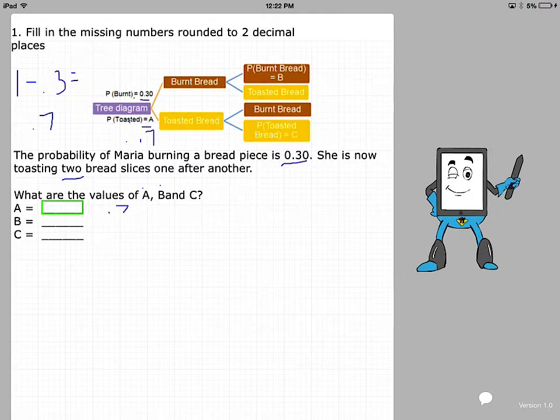Next, let's find what B equals. If we follow the tree diagram, the first piece of bread was burned, and then the second piece of bread was burned. We want to find the probability of two burnt pieces of bread.